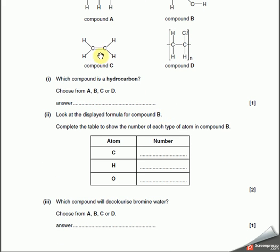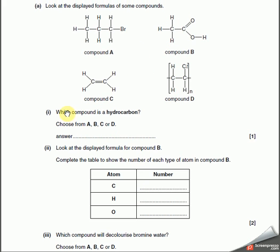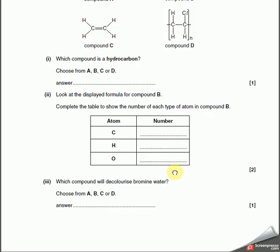Look at the displayed formula of compound B. Complete the table to show the number of type of each atom in compound B. This is easy. Number of carbon atoms? One, two. Hydrogen atoms? One, two, three, four. O? Two. That's really easy. I was expecting that to be a bit more complicated than that.